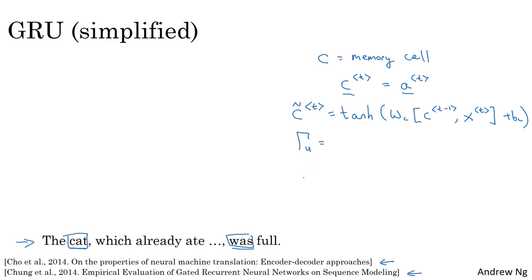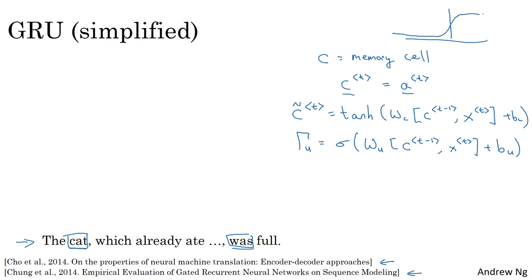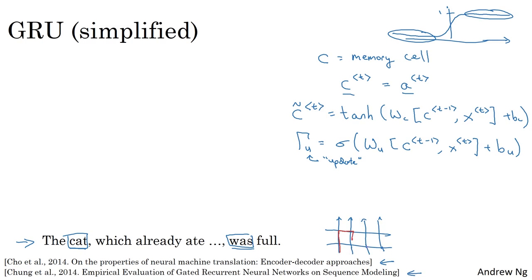For intuition about how GRUs work, think of gamma_u as being always 0 or 1, although in practice you compute it with a sigmoid function. The sigmoid function's values are always between 0 and 1, and for most inputs it's either very close to 0 or very close to 1. Think of gamma as being mostly either 0 or 1. I chose the symbol gamma because if you look at a gated fence, there are a lot of gammas in that fence — G for gamma and G for gate.